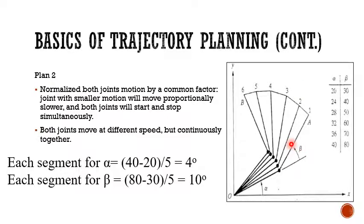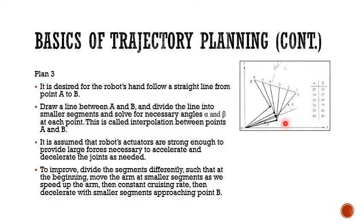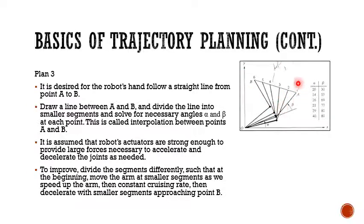The best way is if you want to move from point A to B in a linear interpolation method — moving in a single linear line. You have to interpolate the points in between, and accordingly use inverse kinematics to find the corresponding alpha and beta for this 2-degree-of-freedom planar robot. This is the most popular way of achieving robot movement from one point to another using linear interpolation.